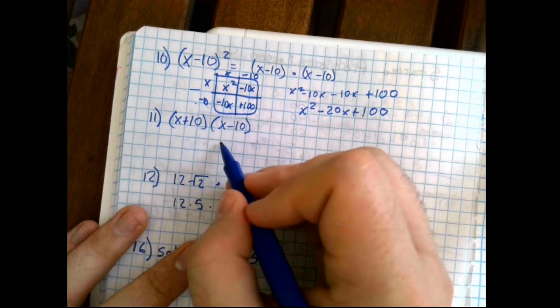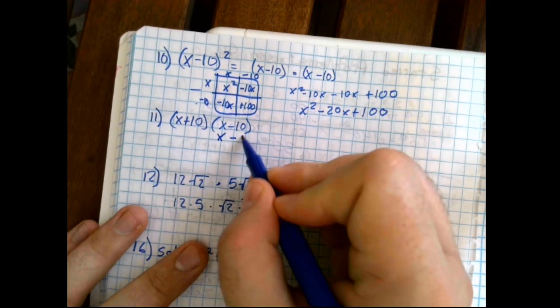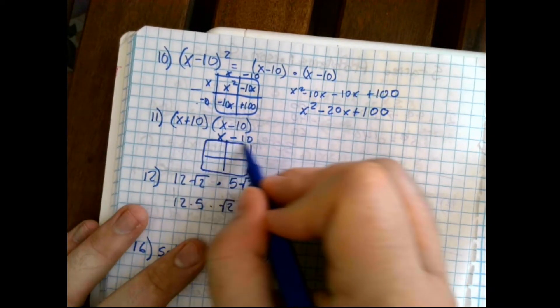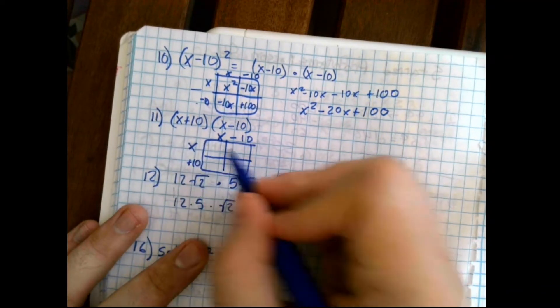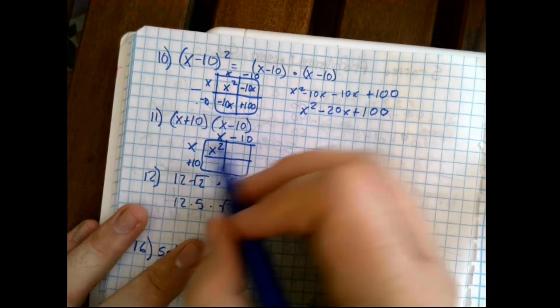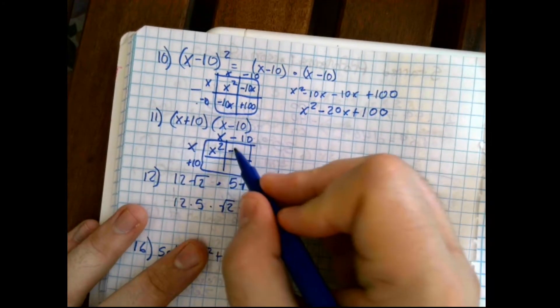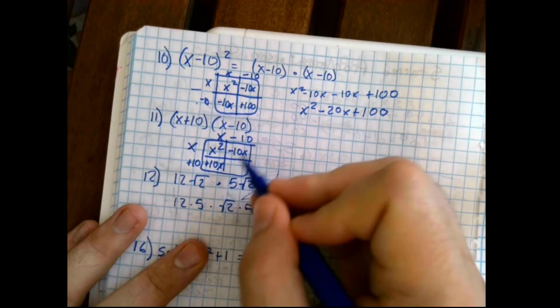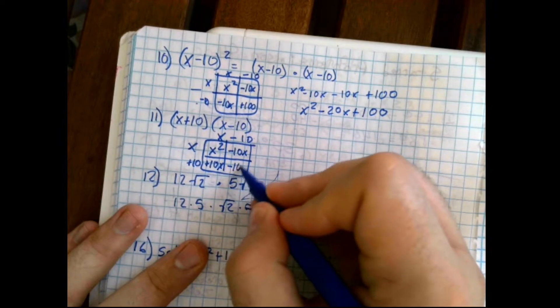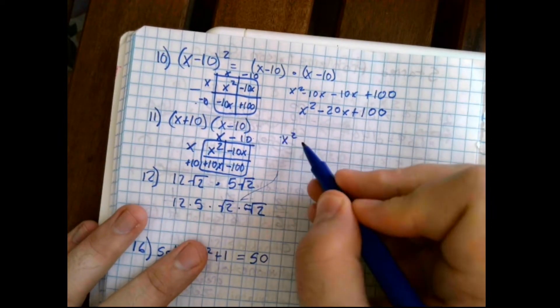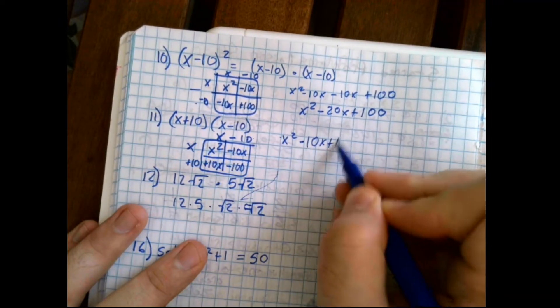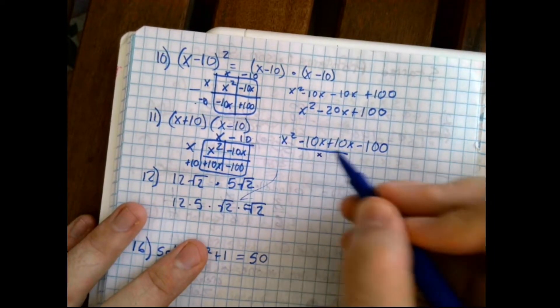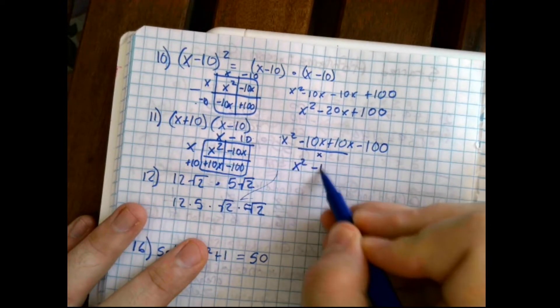We're going to use the box method on this one as well. We have x minus 10 and x plus 10. So here we're going to have x times x, which is x squared. x times negative 10 is negative 10x. x times positive 10 is plus 10x. And 10 times negative 10 is negative 100. So that's going to give us x squared minus 10x plus 10x minus 100. These are additive inverses, so they will cancel out. So we're going to have x squared minus 100.